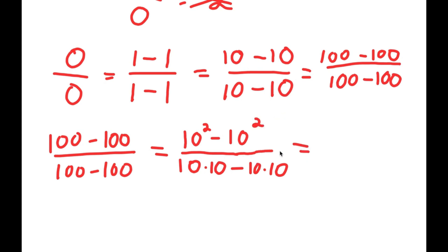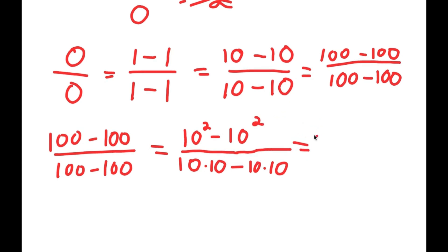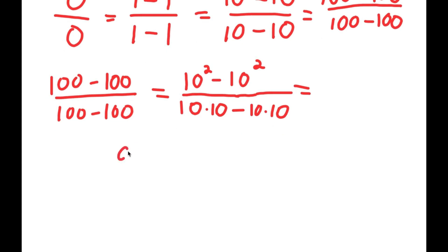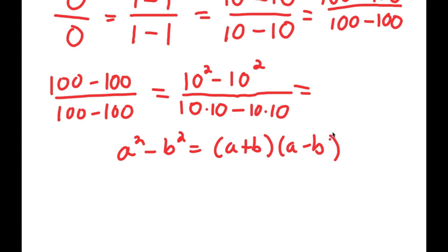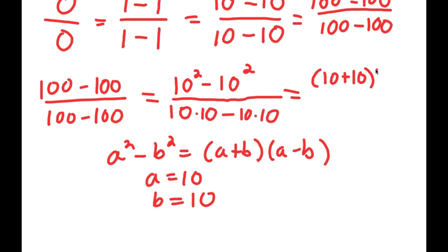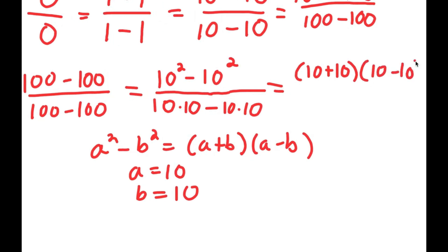The reason why I did this is because if I have something in the form a squared minus b squared, this is equal to a plus b times a minus b. So in this case, I have 10 squared minus 10 squared, and a and b are the same thing — a is 10 and b is 10 as well. So I get 10 plus 10 times 10 minus 10, and I have this over 10 times 10 minus 10 times 10.